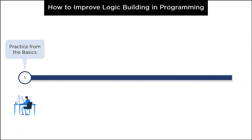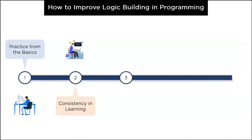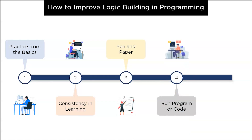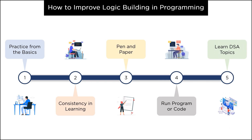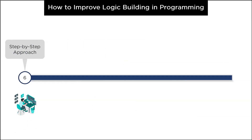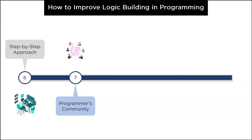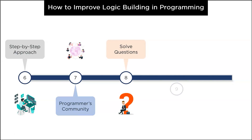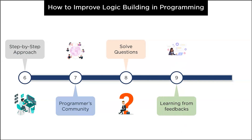The first tip is practice from basics, followed by consistency in learning, then the paper and pen approach. Next, run the program or code, then learn data structures and algorithm concepts, followed by the step-by-step approach. After that, follow the programmer's communities, then solve some questions, learning from the feedbacks of other developers, and finally, having some projects for the portfolio. We will discuss each one of these points in detail.